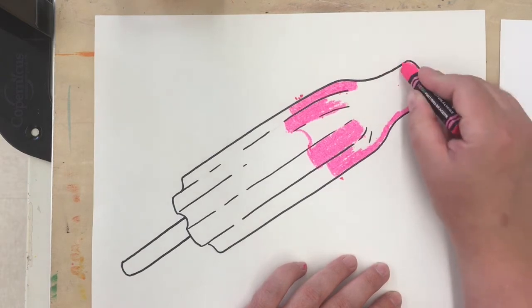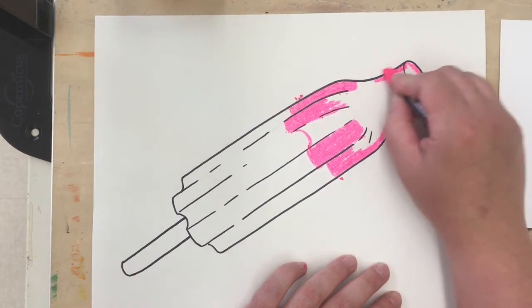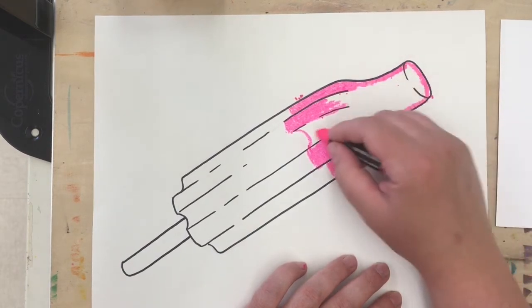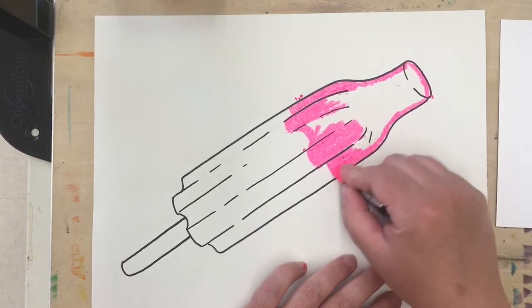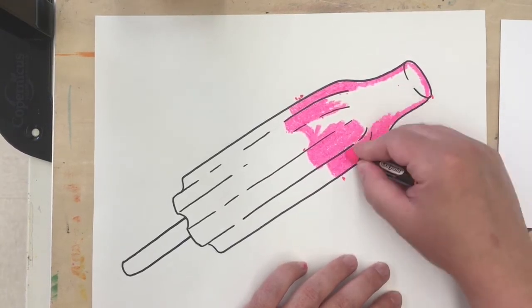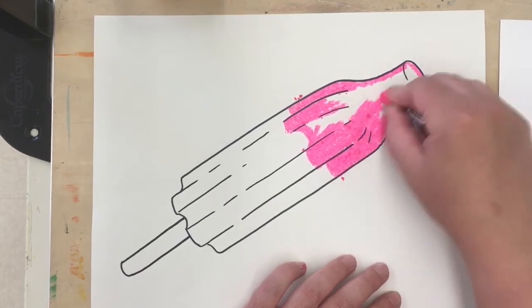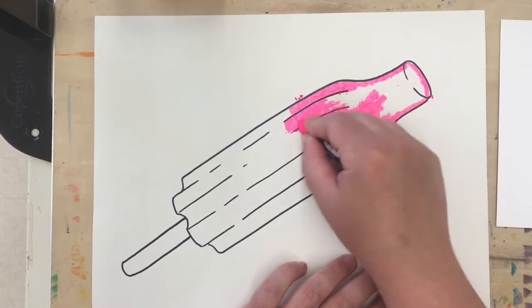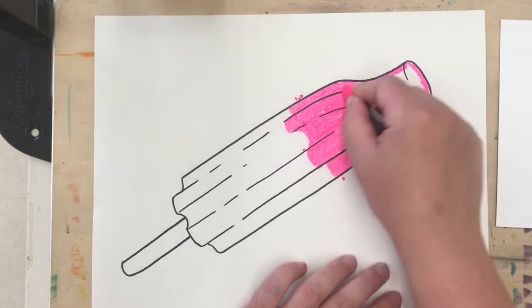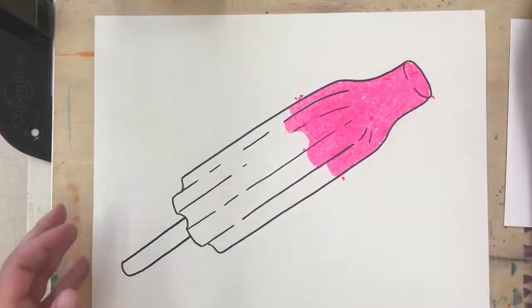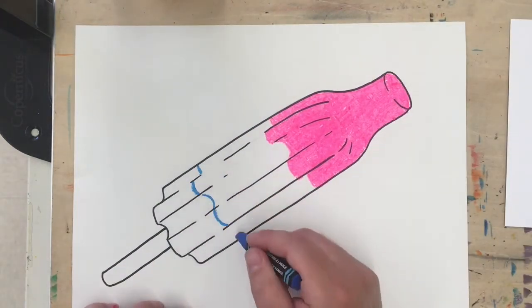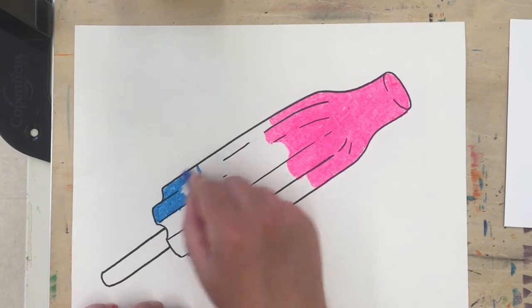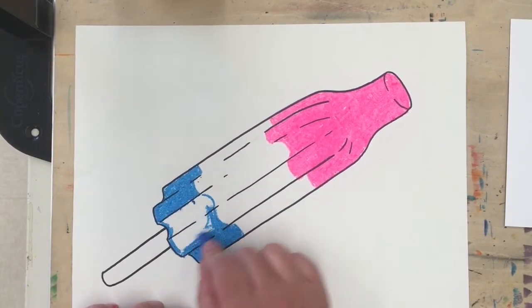As you're working with your color, keep in mind that you want to be able to shade and add highlights. With something like markers that can be a little tricky, but with oil pastels, crayons, and colored pencils it works pretty well, and I will demonstrate that technique. Don't forget to color in the popsicle stick as well. Try to use a light color like brown, tan, or even peach if you have it.